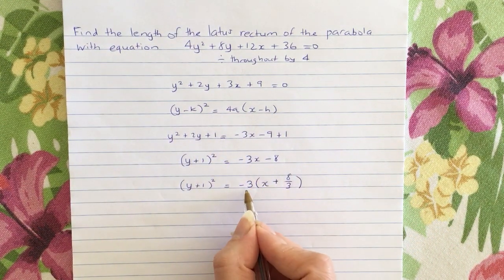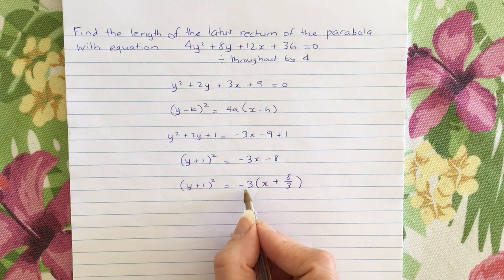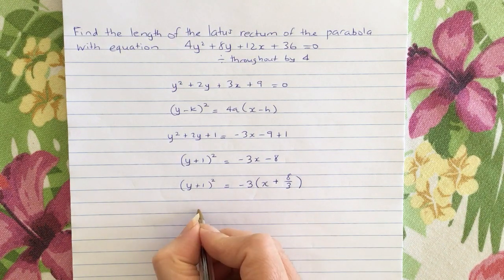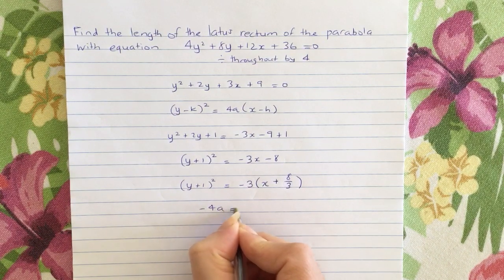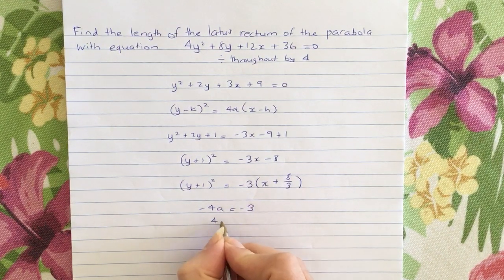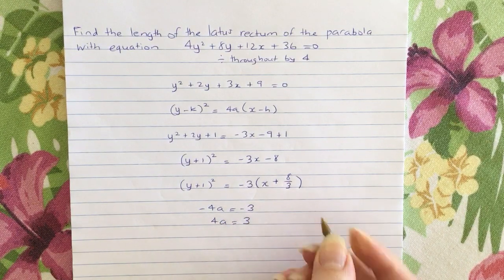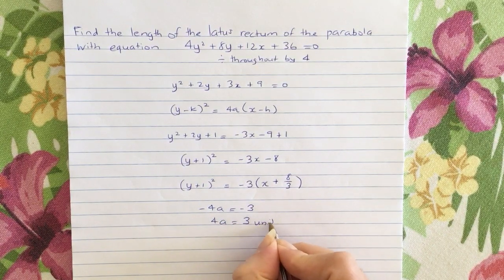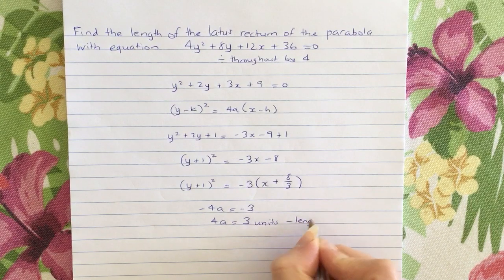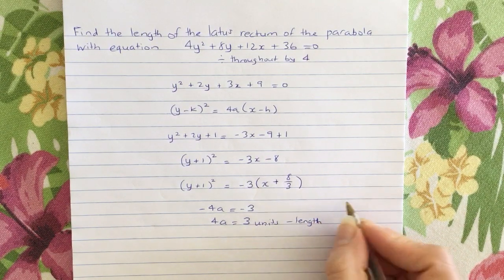Okay, obviously this -3 is equal to -4a. So -4a = -3. The minuses will cancel, you'll get 4a = 3 units. That is the length of the latus rectum of this parabola.